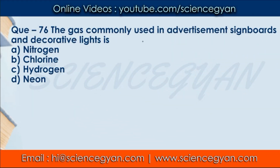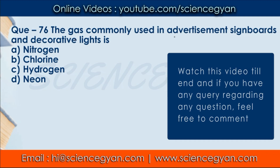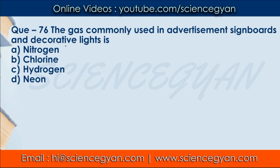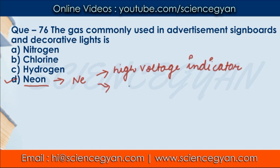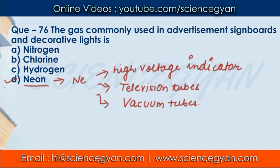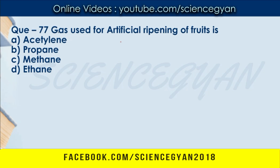Question number 76: The gas commonly used in advertisement sign boards and decorative lights — which gas is used in advertisement sign boards and decoration lights? The correct answer is D — Neon gas. Its symbol is Ne. Neon is also used in high voltage indicators, television tubes, and vacuum tubes.